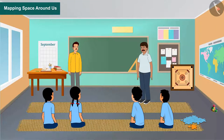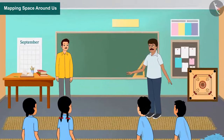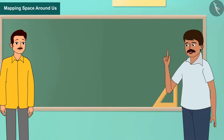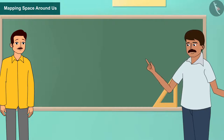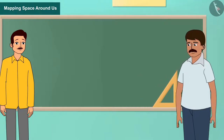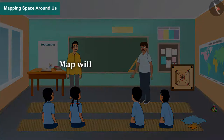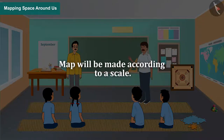For this, we will first find the length, width, and height of the class and each item kept in the class. With the help of these measurements, we will create a map from which we can estimate the location of the objects and the distance between them. This map will be made according to a scale.